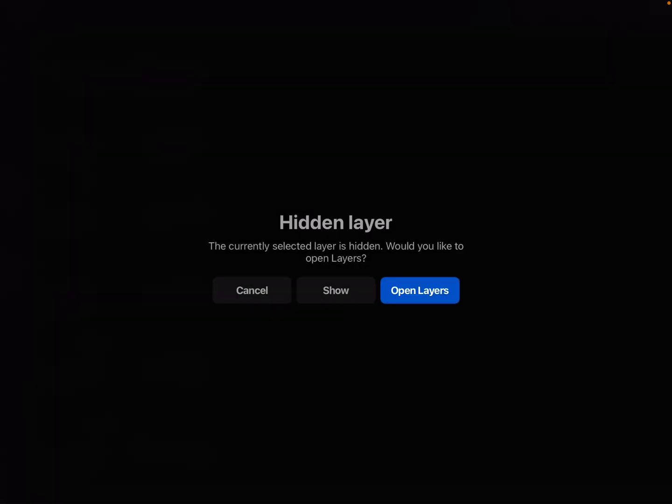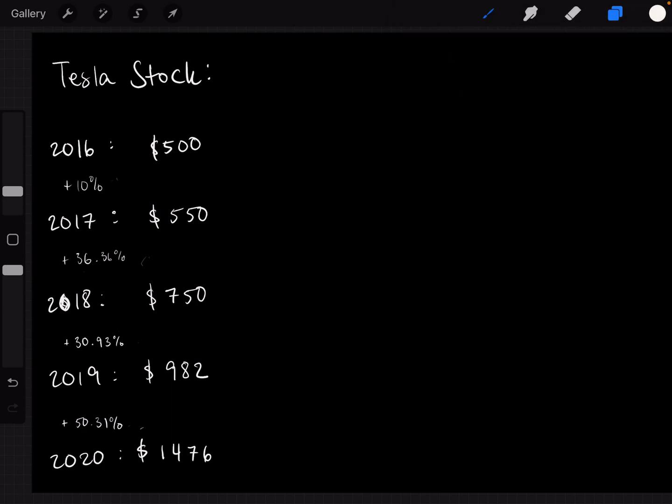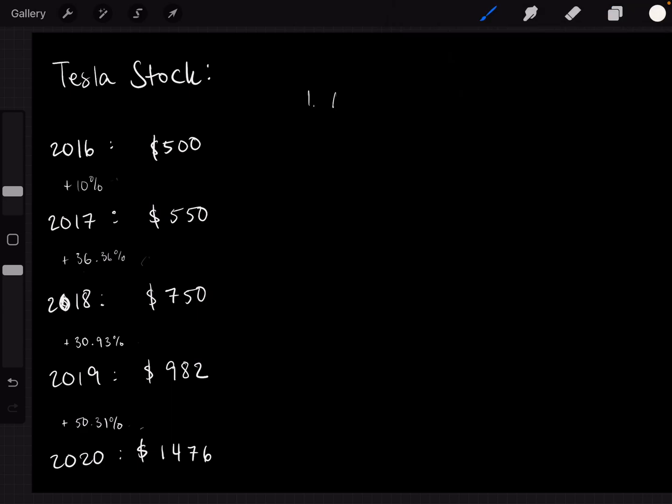So for the arithmetic average, the way you would calculate that is 10% plus 36% plus 30% plus 50%. And since they're percentages, I will write them as decimals. So 1.1, that's a 10% rate of growth, plus 1.3636 plus 1.3093.